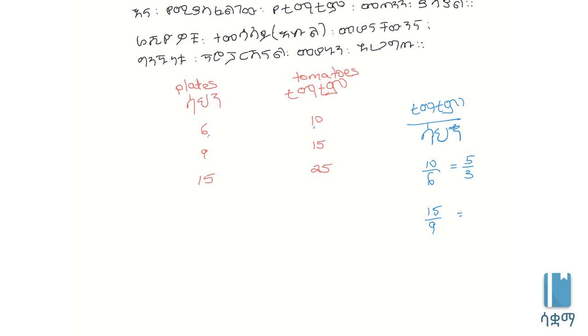Ten divided by six. Then fifteen divided by nine. Finally, twenty-five divided by fifteen. We calculate these ratios to compare them.